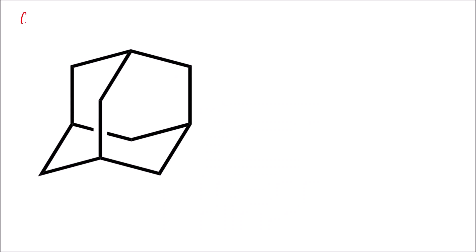For finding out the number of signals, what we have to do is find out the chemical environment. Chemical environment means the bonding or the structure of carbons. Since we are finding the number of signals for 13C NMR, we will look at the bonding around each carbon atom. If we were finding the number of signals for 1H NMR, then we would look at the hydrogen atoms.